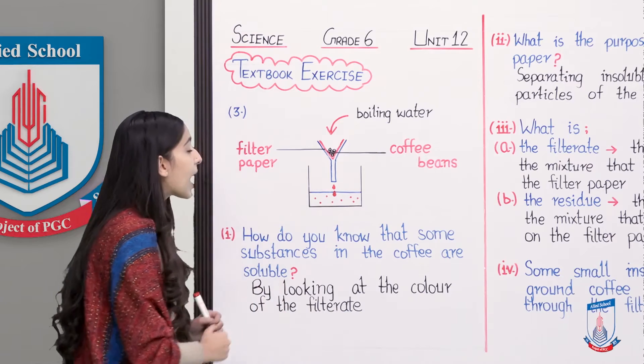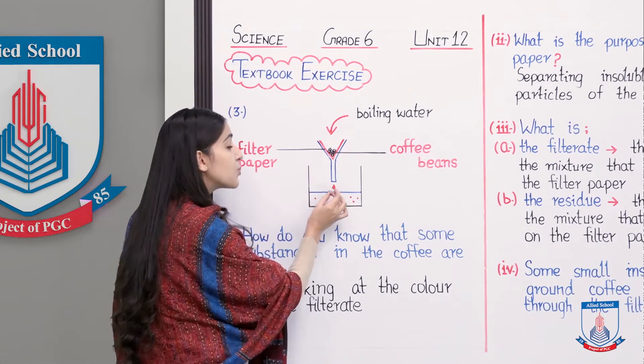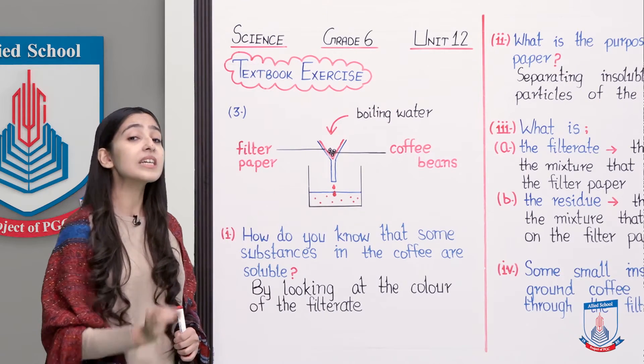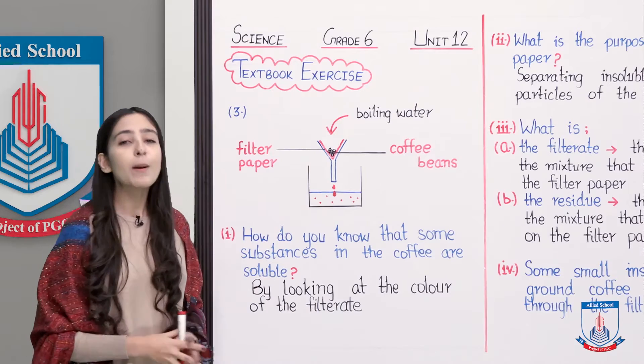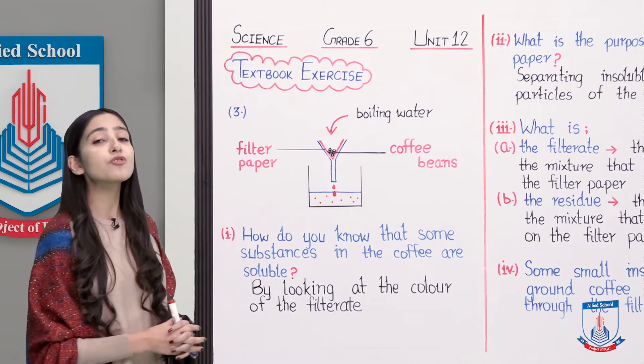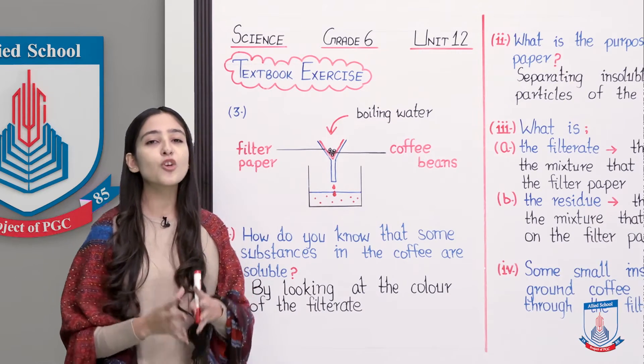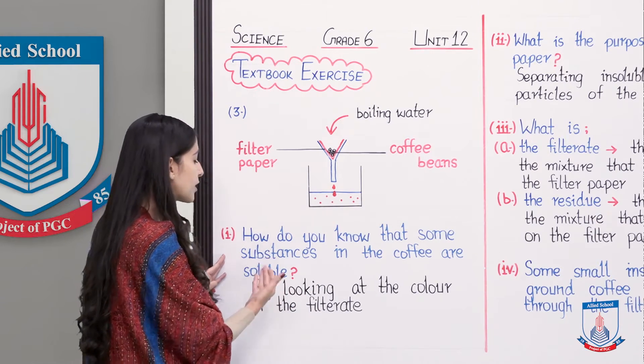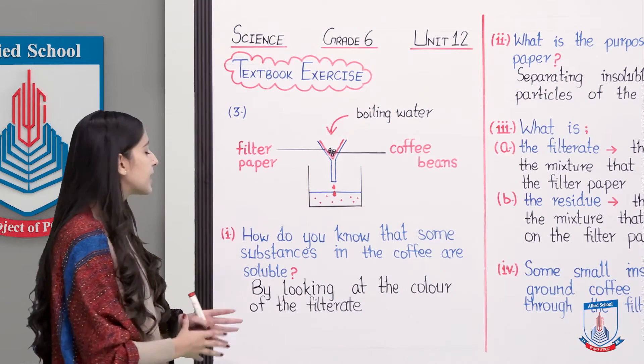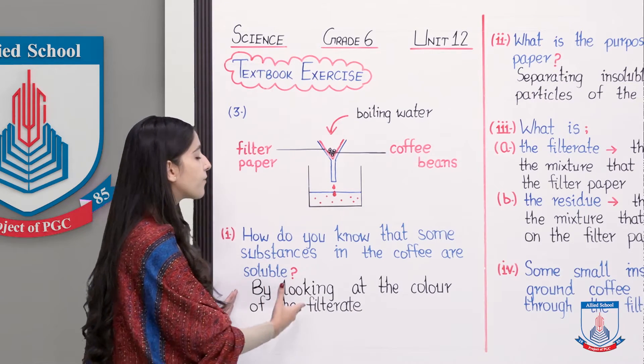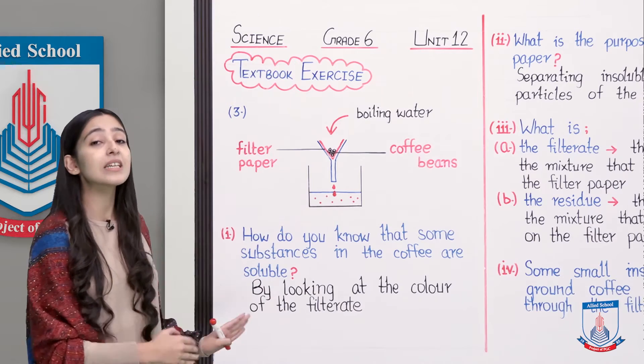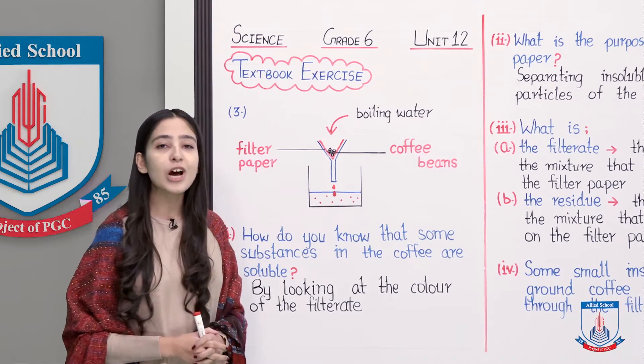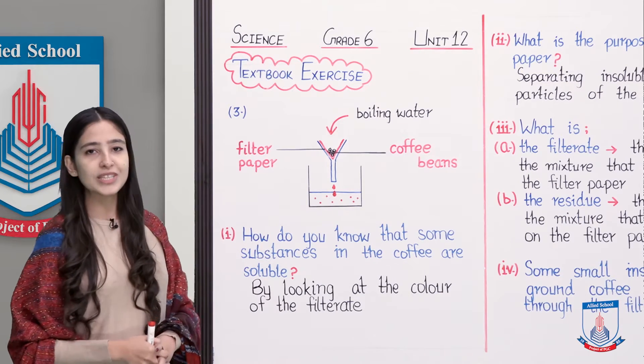So here we saw that when we poured boiling water, which was transparent in color, over these coffee beans, the filtrate we got was brown in color. When we saw that the filtrate is brown in color, we realized that there was something in the coffee beans, some particles that were soluble in water and passed through the filter paper.